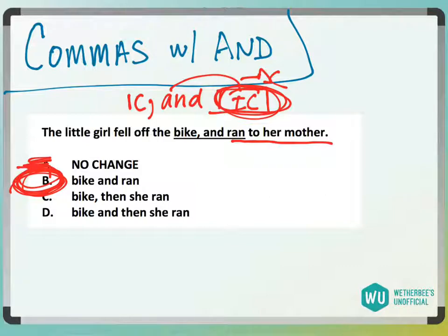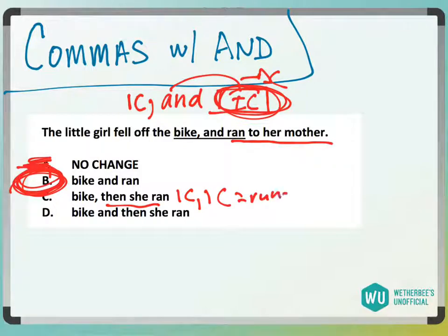But to disprove C and D — C would be like 'The girl fell off her bike,' independent clause, 'then she ran to her mother,' independent clause — that's a run-on, so that's no good.